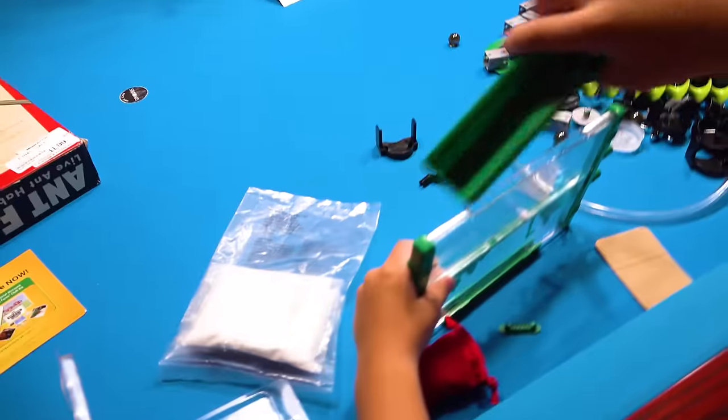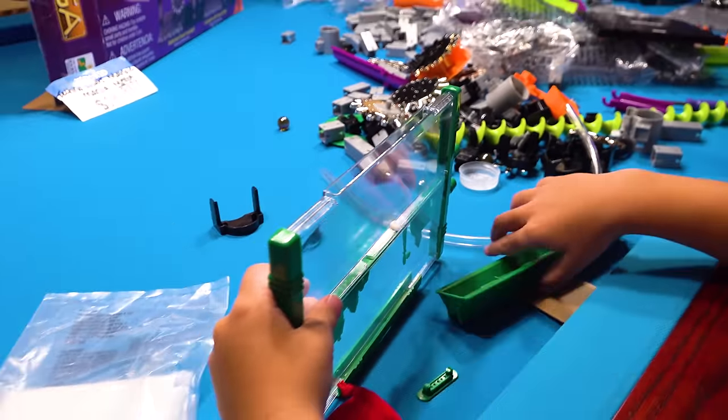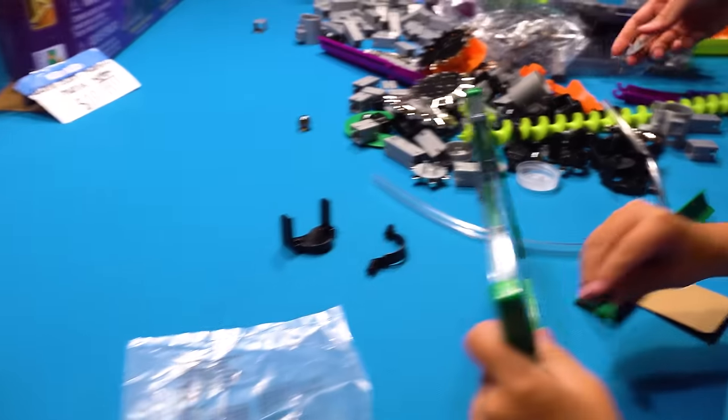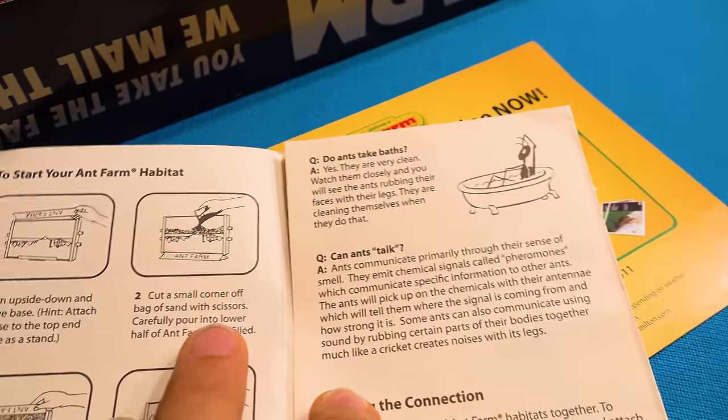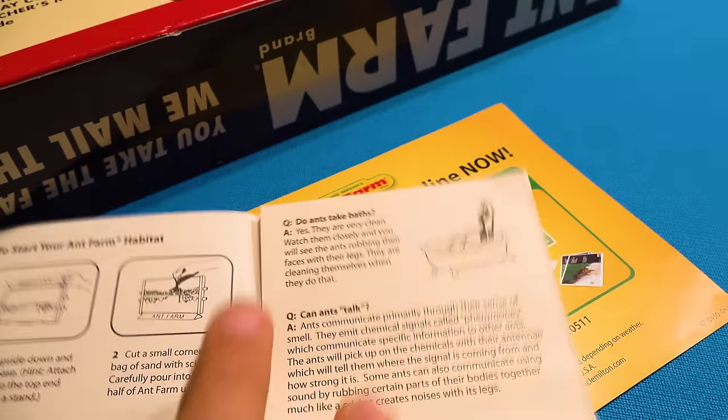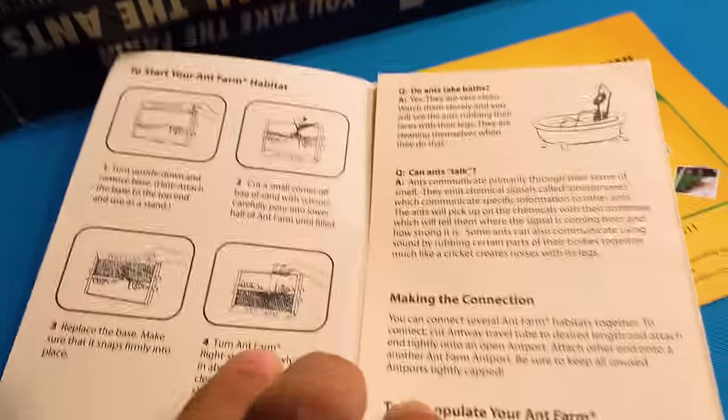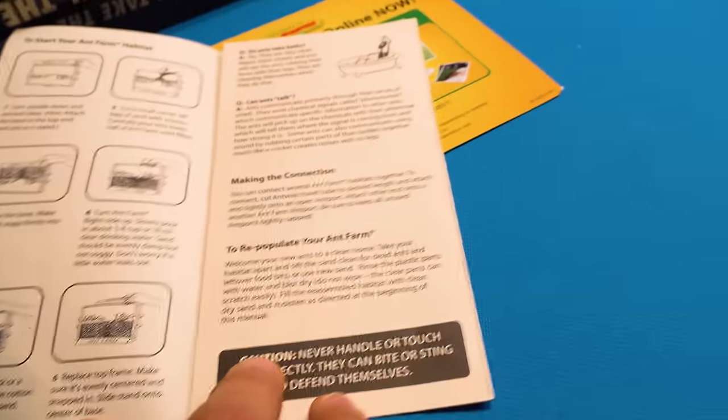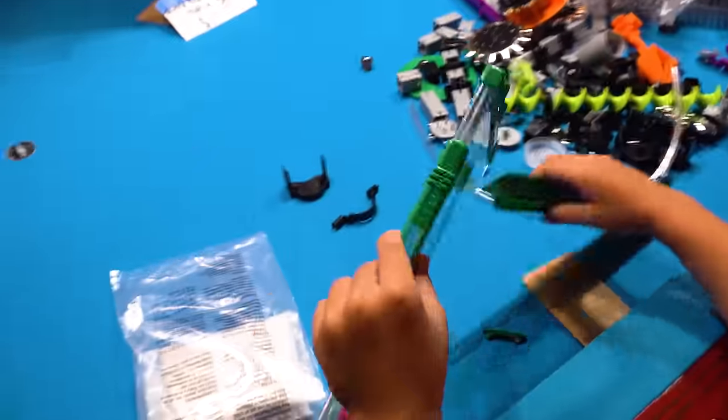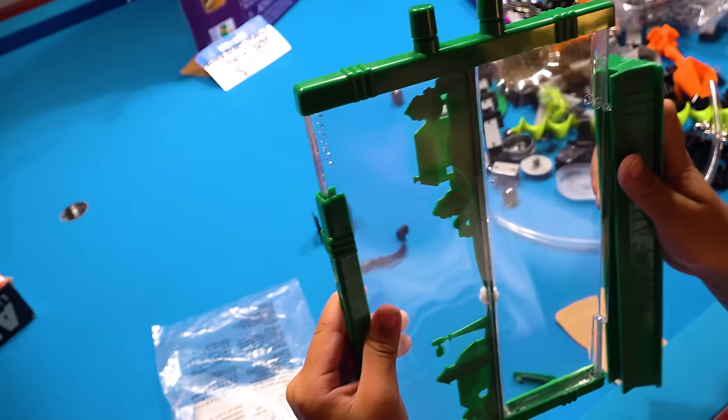While daddy's doing that, Papa and I are so fixated on this ant farm. We want to get it going. Okay, so we learned to move off the bottom. Cut a small corner off the bag with sand. This looks really old. Carefully pour into the lower half. You know what? We need to wait until we get some ants. I think so. Yeah. Let's put this aside until we get some ants and we'll revisit this. I'm gonna go order them.